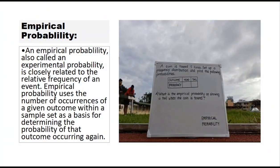Empirical probability, also called experimental probability, is closely related to the relative frequency of an event. Empirical probability uses the number of occurrences of a given outcome within a sample set as a basis for determining the probability of that outcome occurring again.